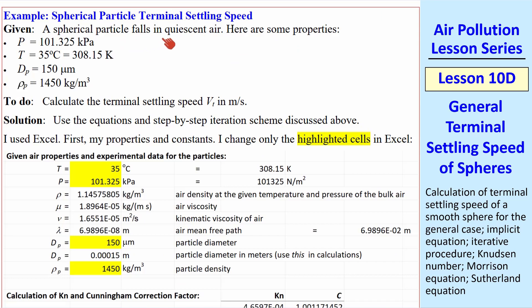We have a spherical particle falling in quiescent air. Here's the pressure and temperature of the air, the particle diameter in microns, and the particle density. We want to calculate terminal settling speed vt. To solve, we'll use the step-by-step iteration scheme that I just discussed.